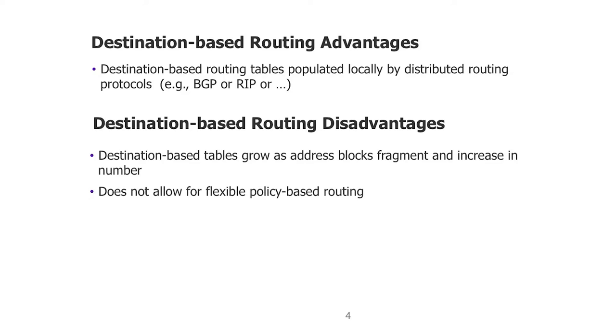It works. One of the problems is that these destination-based tables grow as address blocks get fragmented — IPv6, whatever — they get bigger and bigger. And it also doesn't allow for what I'm going to call flexible policy-based routing.